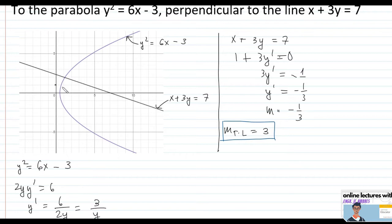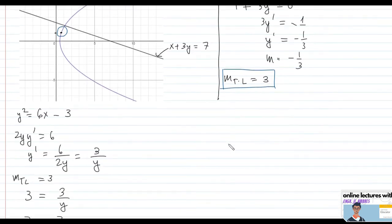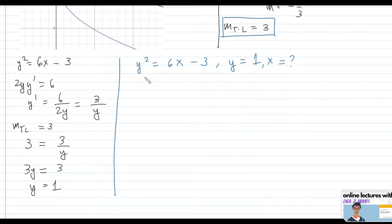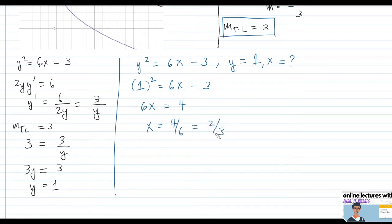When y equals 1, we substitute back into y squared equals 6x minus 3: 1 equals 6x minus 3, so 6x equals 4 and x equals 2 thirds. The point on the parabola with slope 3 is therefore (2/3, 1).